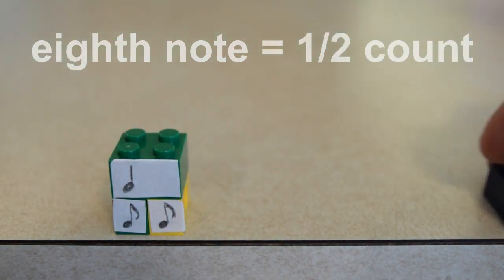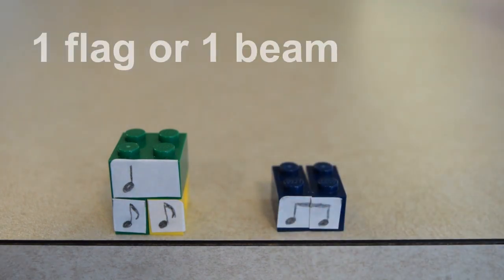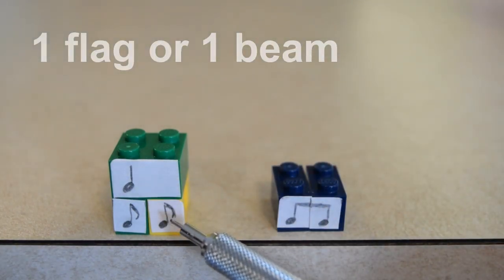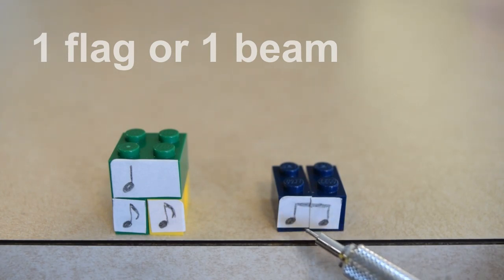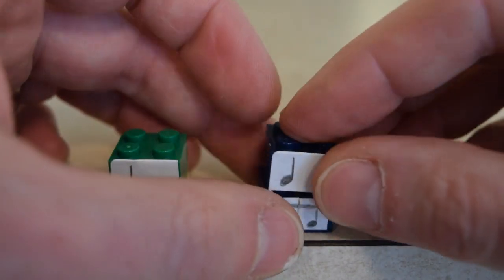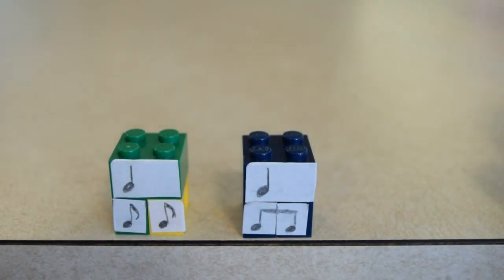Eighth notes can also be written as beamed notes, so they can either be a single note with a single flag, or they can be two notes with a single beam between them. That's two different ways of writing the same thing. Those are all the same types of eighth notes, and they all fit into a quarter note the same way.